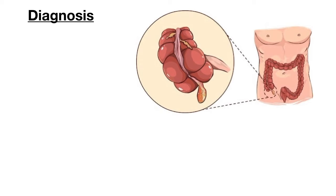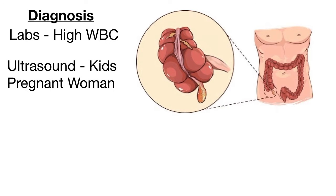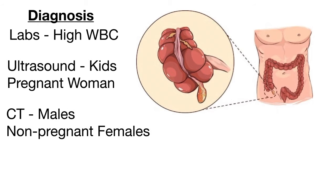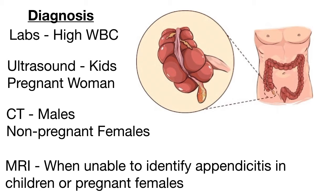To diagnose appendicitis, blood work and some type of imaging is performed. On the blood test, you might see an elevated white blood cell count due to inflammation and/or infection. However, a normal white blood cell count does not rule out appendicitis. For imaging, the first modality is ultrasound, which is usually the imaging of choice for pediatric patients and pregnant women. CT abdomen and pelvis can be used on males or non-pregnant females. MRI imaging may be necessary when appendicitis cannot be identified in pediatric patients or pregnant females on ultrasound, or when you want to avoid radiation from a CT scan.